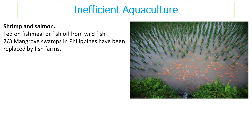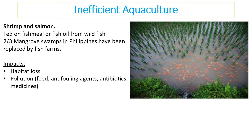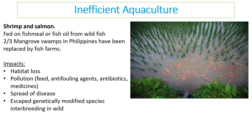Shrimp and salmon are particularly inefficient aquaculture methods. They are fed on fish meal or fish oil, and where they are grown, mangrove swamps have been ripped out. Mangroves are essential in preventing flooding, cleaning water, and fighting the impacts of climate change and storm surges. This is causing habitat loss, pollutants entering the water, use of antibiotics and medicines to increase growth, disease spreading easily into the outer environment, and genetically modified species escaping and out-competing native species. It is a significant problem of inefficiency.